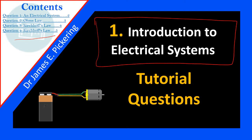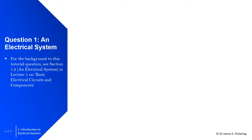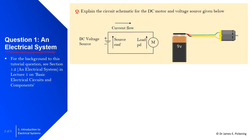Hopefully you've watched the lecture on an introduction to electrical systems. So for question one, we're going to focus on electrical systems. This is based on section 1.2 from lecture one. The question is: explain the circuit schematic for the DC motor and voltage source given below.